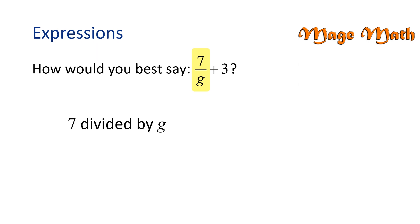Then we have the second part of the expression, which is read as plus 3. Putting it all together, we have 7 divided by g plus 3.